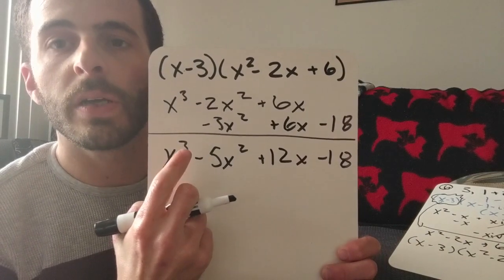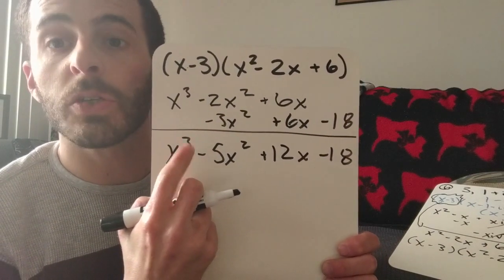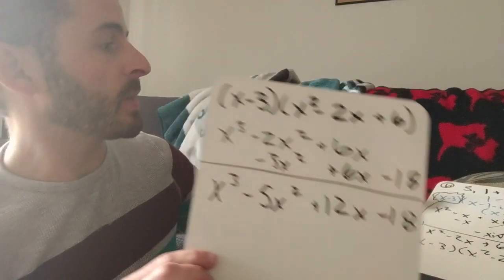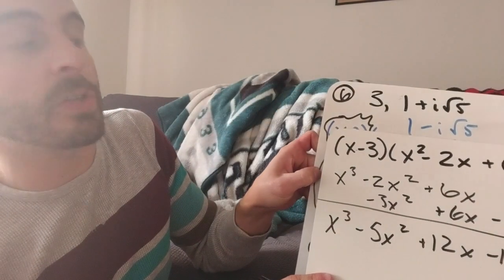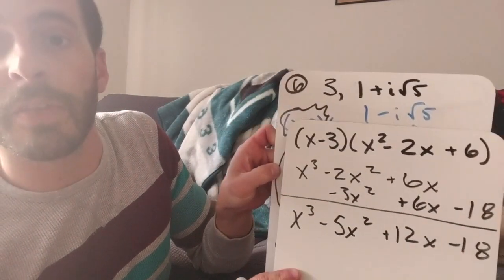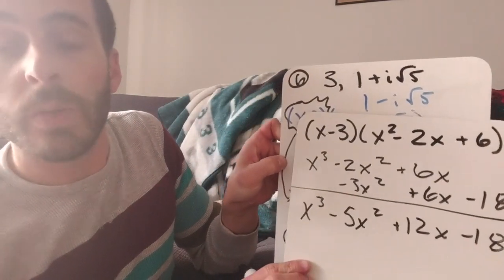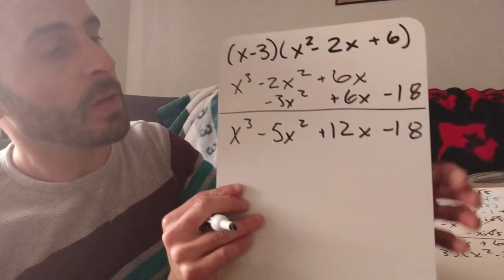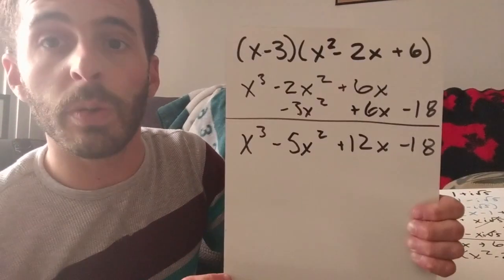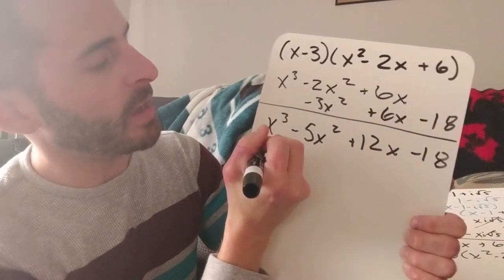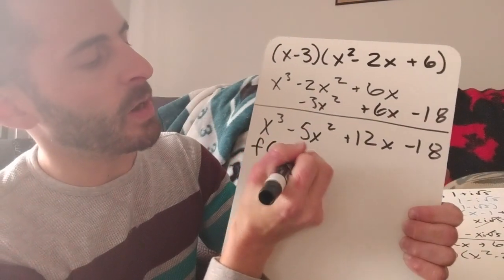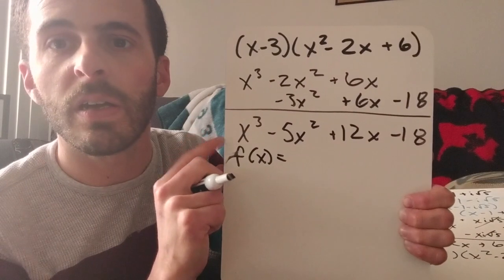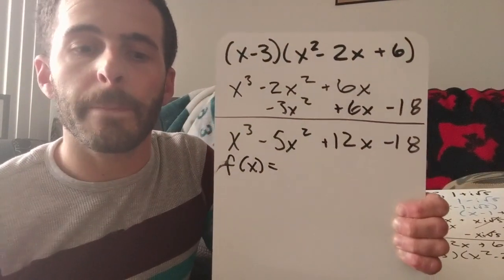That x cubed tells you how many solutions there should be — three. We were given two roots and had to figure out the third one, which is the conjugate, so we had three solutions to start with, which means our answer should be a cubic function. We're going to write f(x) equals in front of it, and there you go.